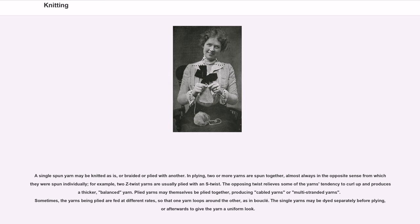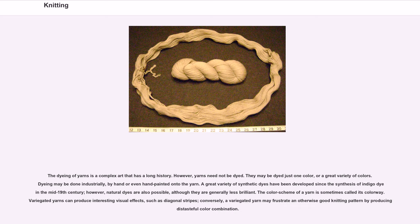The dyeing of yarns is a complex art that has a long history. Yarns need not be dyed; they may be dyed just one color, or a great variety of colors. Dyeing may be done industrially, by hand, or even hand-painted onto the yarn. A great variety of synthetic dyes have been developed since the synthesis of indigo dye in the mid-19th century; however, natural dyes are also possible, although they are generally less brilliant. The color scheme of a yarn is sometimes called its colorway. Variegated yarns can produce interesting visual effects such as diagonal stripes; conversely, a variegated yarn may frustrate an otherwise good knitting pattern by producing a distasteful color combination.